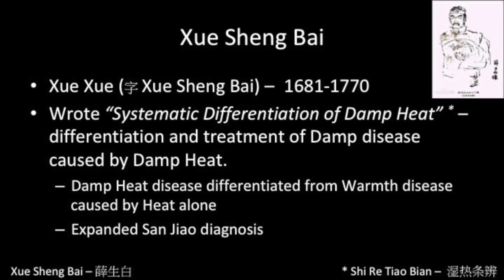Xue Shengpai differentiated warmth disease according to whether it was caused by damp heat or heat alone. In Sanjiao diagnosis, he maintained that diseases caused by damp heat were more prone to attacking the spleen and stomach and treated them accordingly.